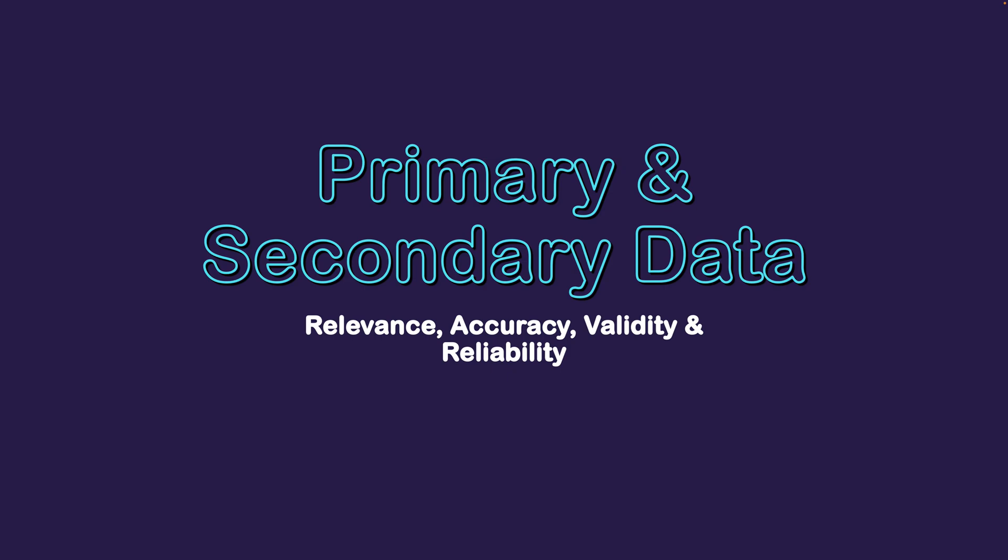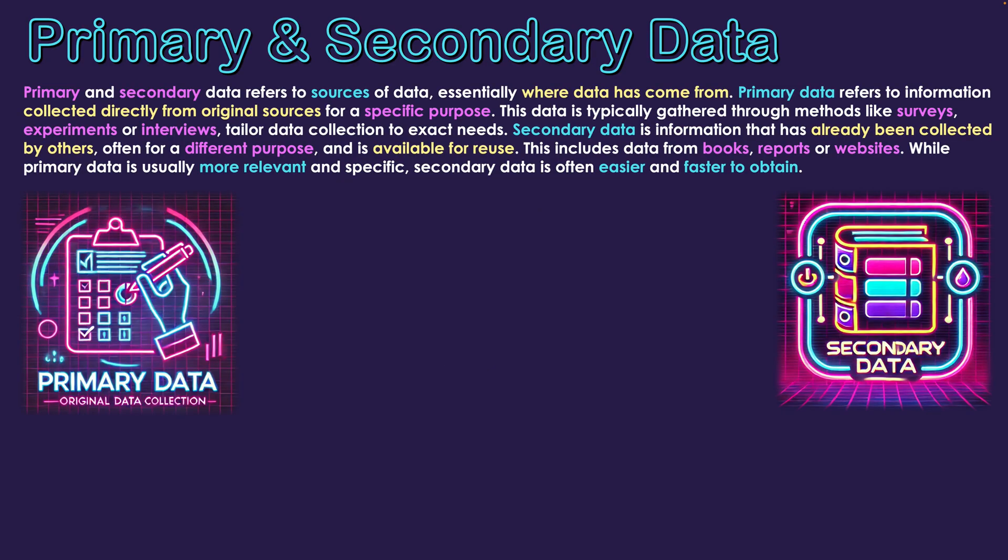Primary and secondary data, relevance, accuracy, validity, and reliability. Primary and secondary data refer to sources of data, essentially where data has come from. When we are trying to collect data for a specific purpose, we obviously gather it from a variety of locations. With primary and secondary data, we're determining where those locations are.